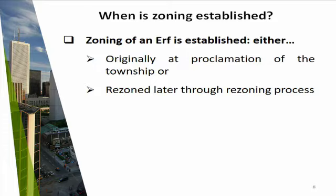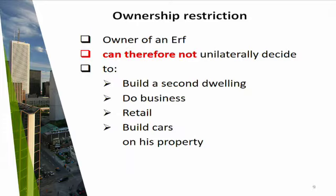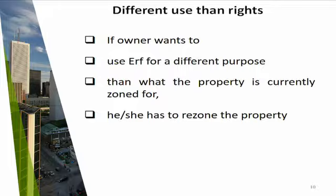We establish our zoning in two ways. The first is originally when we proclaim the township in which this property is situated, or later on we can rezone the property. So my ownership restriction means that when I own a property, I can only do what my zoning tells me I can do. If I live in a normal suburb, I can't all of a sudden manufacture anything from my residential unit, I can't do retail, and I can't run a business from that property.